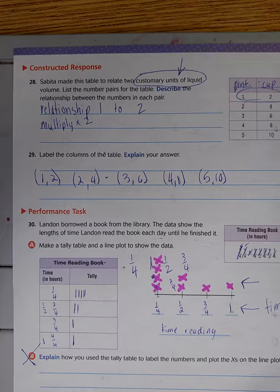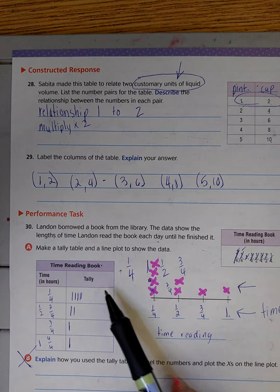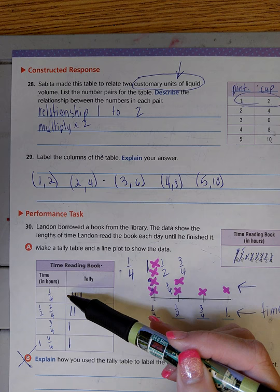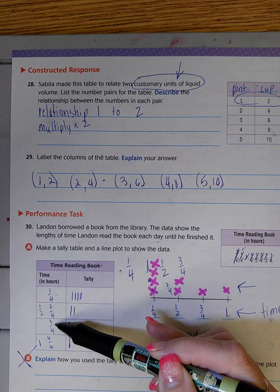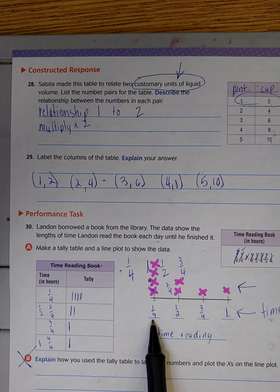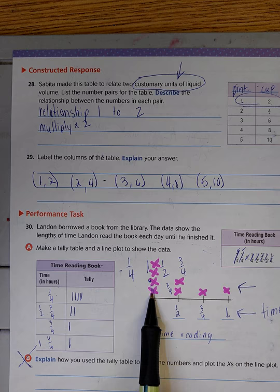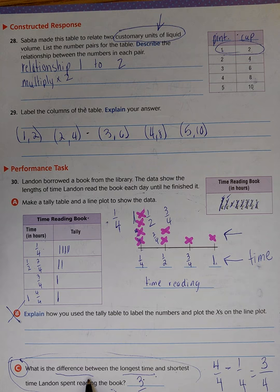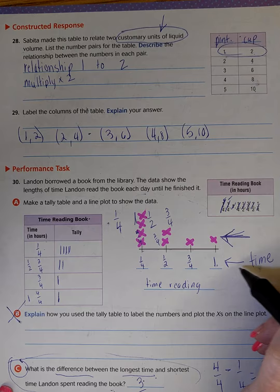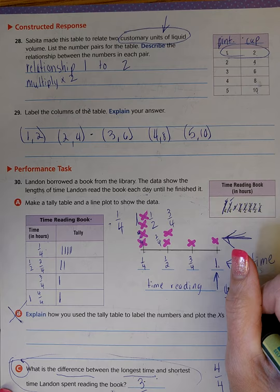The last one is a line plot. We're given the data information. We have to write our information from least to greatest - that's in size, not the number of times it occurs. One fourth is smaller than one half, one half is smaller than three fourths, and three fourths is smaller than one whole. I also write that information on my number line in sequence: one fourth, one half, three fourths, and one. I give it a title and then I plot the data. This is how many times that piece of data occurs. Then we answer the question: what is the difference between the longest time and the shortest time?